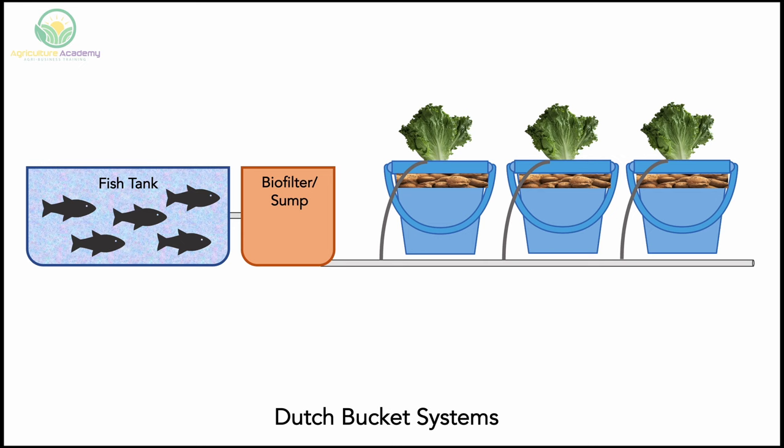In the Dutch bucket system, a series of buckets are connected to your fish tank. The water is pumped from the fish tank through the biofilters, then through a series of thin plastic spaghetti pipes into the buckets. The buckets are filled with inorganic substrate which supports the plants. Growers suggest pumping water continuously, providing a gentle, uninterrupted supply of water to the roots.